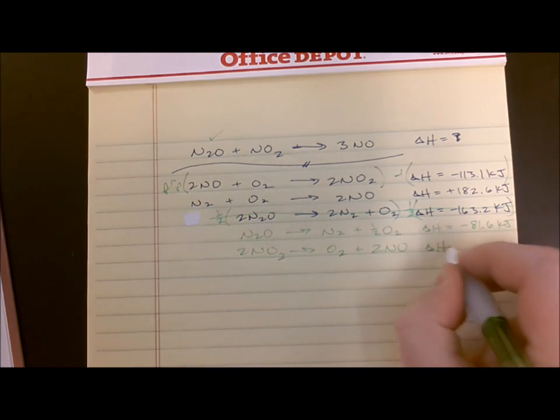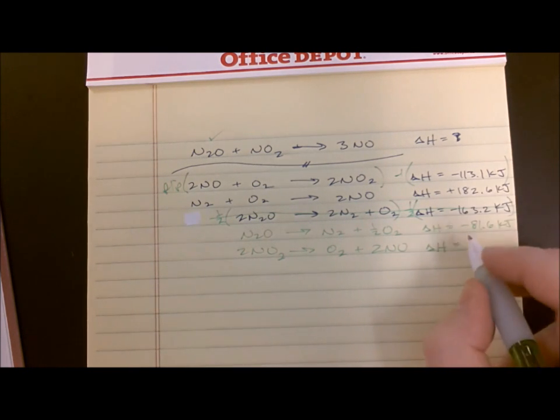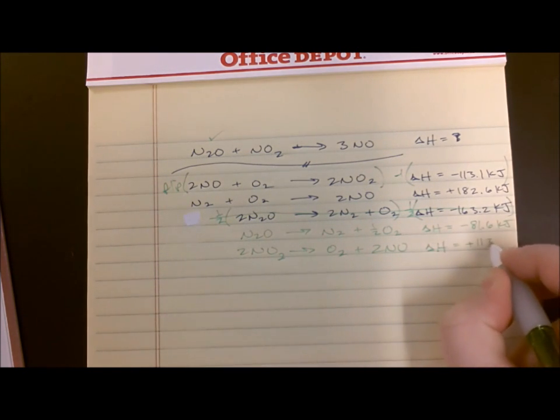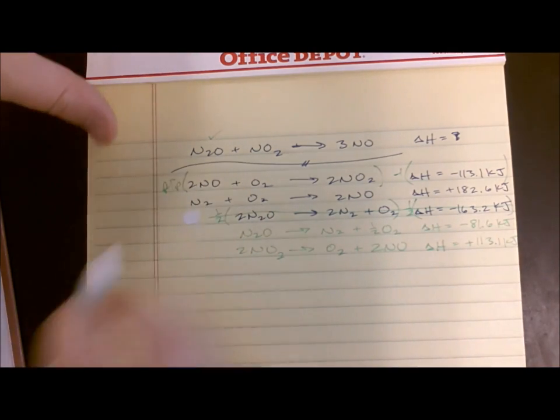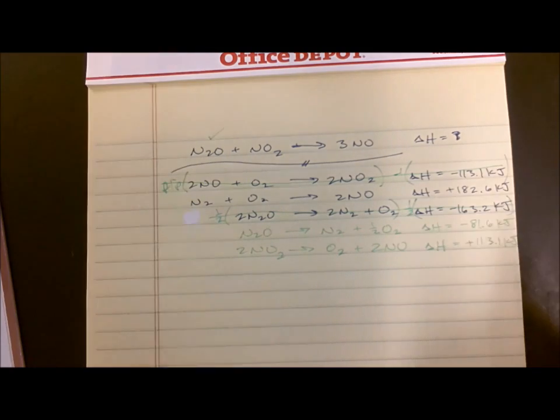So writing this reaction backwards, two NO2s makes O2 plus two NOs. And the delta H for this reaction, instead of being negative 113.1, is now positive 113.1. And I've changed it, I'm going to put a line through it.